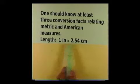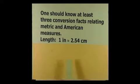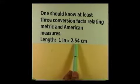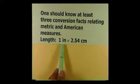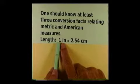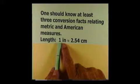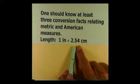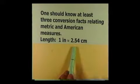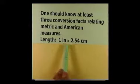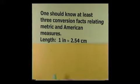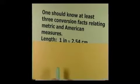By knowing this bridge — one inch is approximately 2.54 centimeters — one can convert from any American length to any metric length. You do the unit analysis on the American side to get to inches, use the bridge to get to the metric side, and then you can go to wherever you need on the metric side.